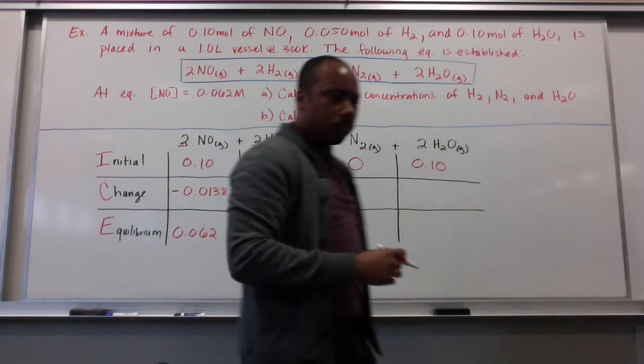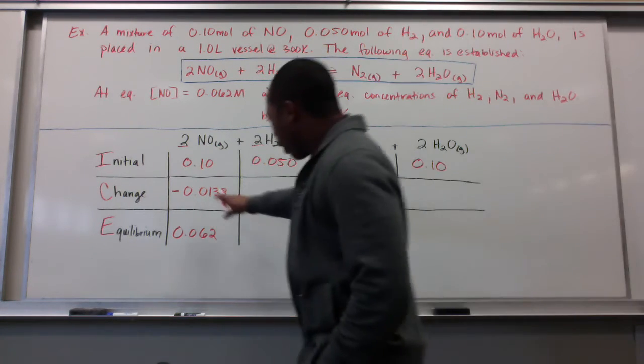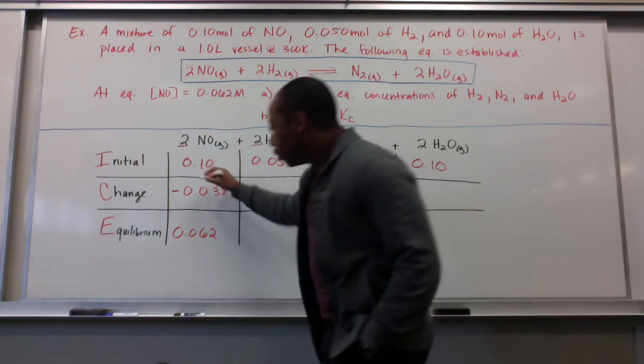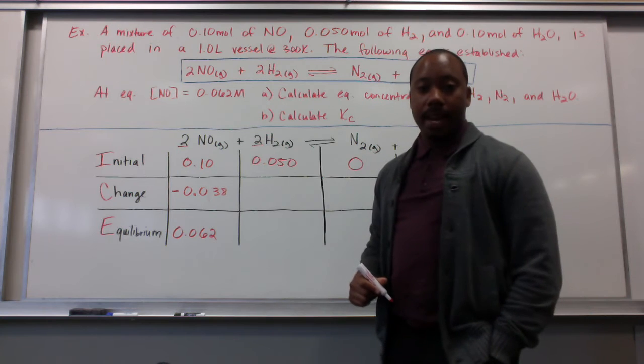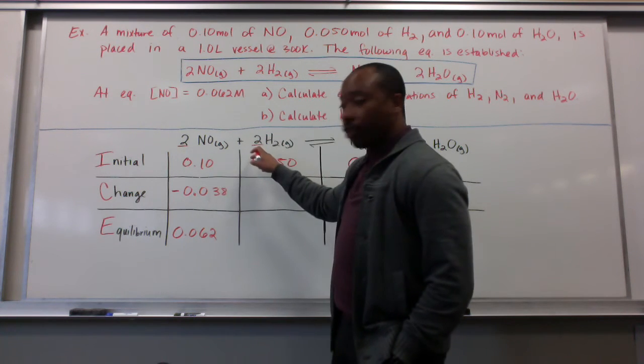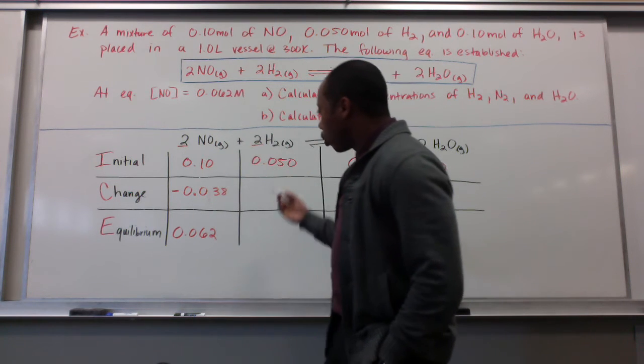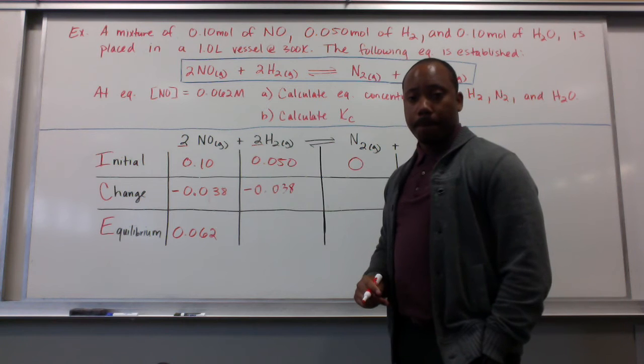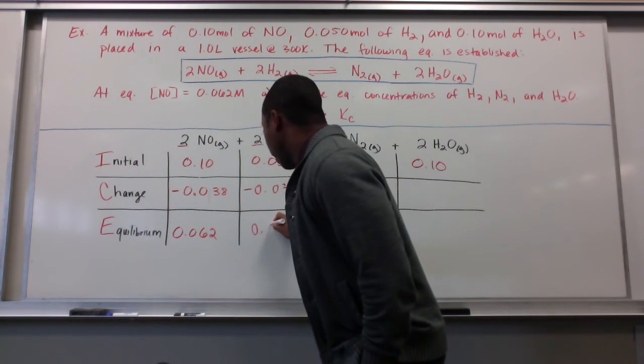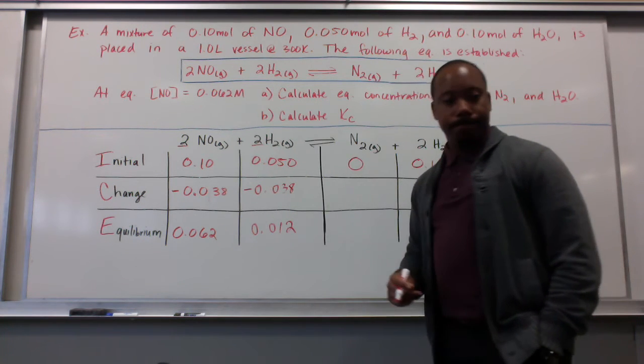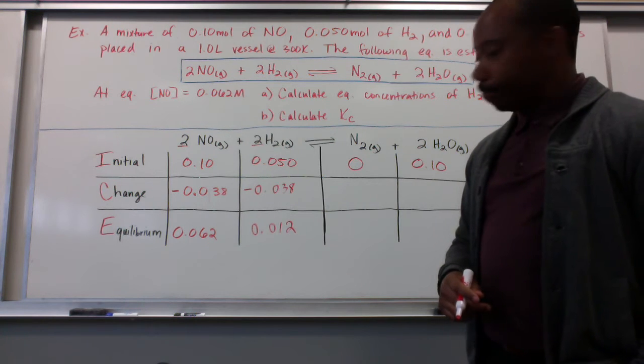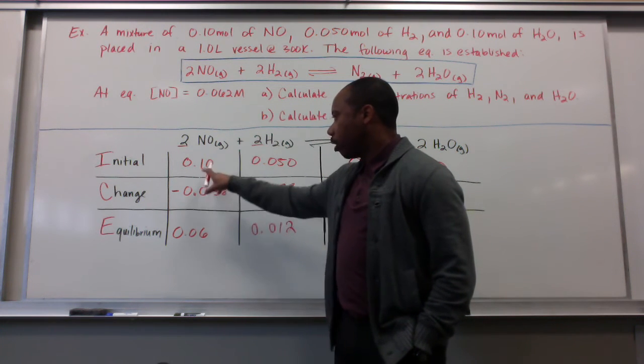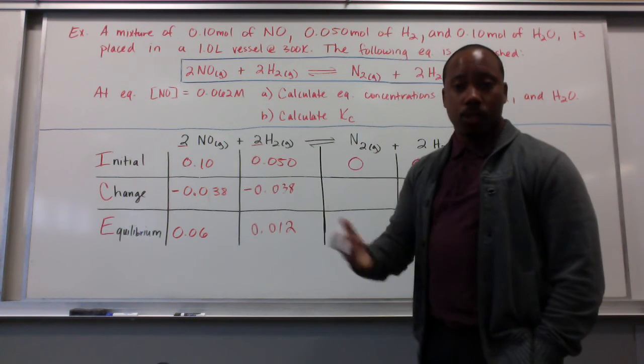Since we have a 2 to 2 ratio, or 1 to 1 ratio, this substance will also change by 0.038. When we do that, we get 0.012. And, for significant figure's sake, this is actually going to just round down to 0.01, since it only goes to the hundredth place here, just so we can carry that on later on.